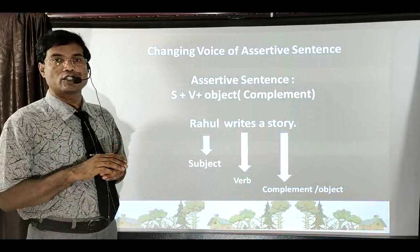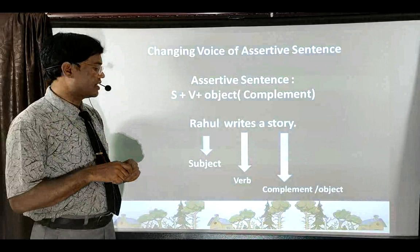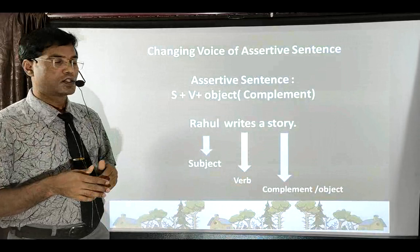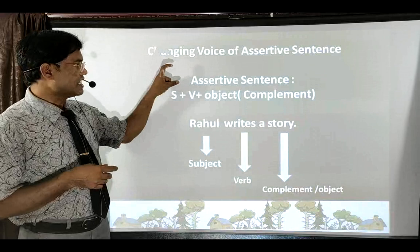When you convert any assertive sentence to passive voice, you must identify three things in the sentence: who is the subject, which is the verb, and which is the object part. If you can identify these three things in a sentence, converting it to passive voice becomes the easiest task.